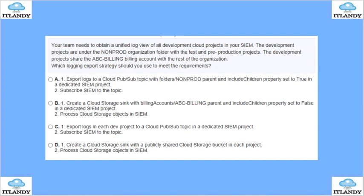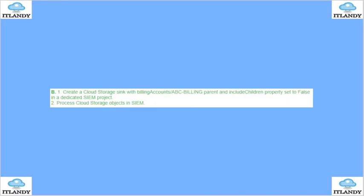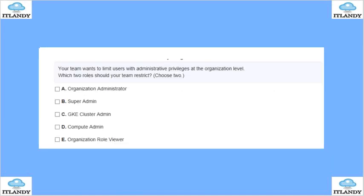The answer is B. Create a cloud storage sink with the billing account ABC as parent and include the children property set to false, then process the objects in your SIEM. That was the trick.